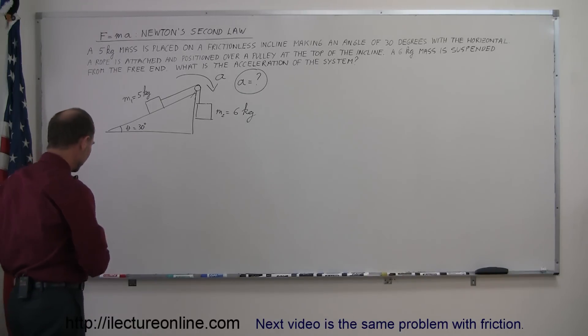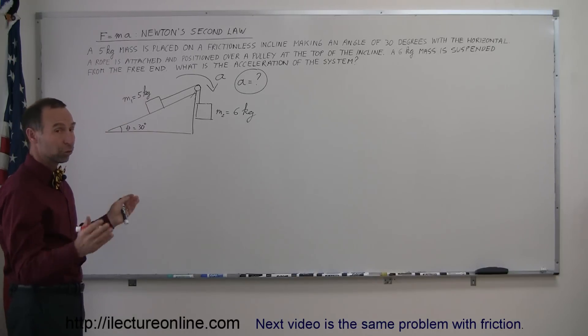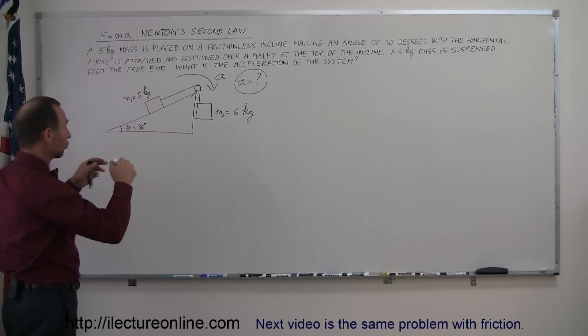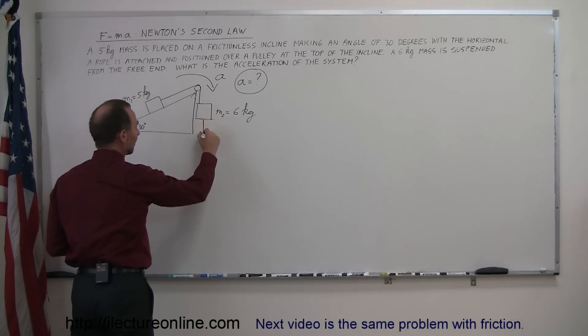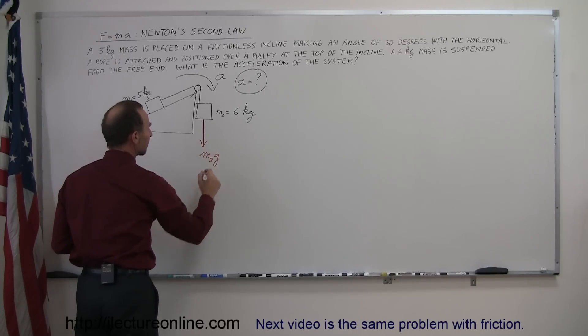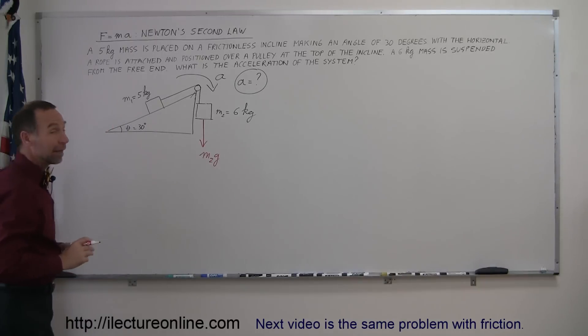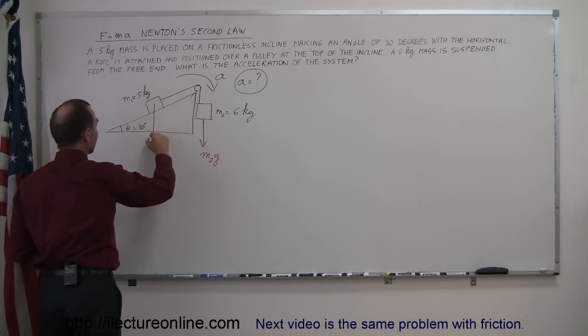Now, the next step is to find all the forces acting on the system, external forces from external sources to the system. So starting with this mass right here, we can say that gravity acts on the system, and so the weight pulling down is equal to m2g. Likewise, gravity also acts on this mass, so we'll have weight pulling down this way, m1g.